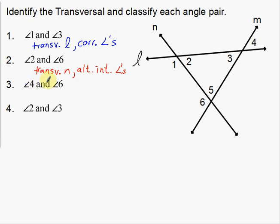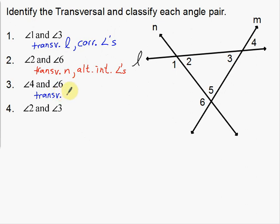Next, angles four and six. We're using six again, but now going all the way up to four. Notice M right here is going to be my transversal — it helps make six and it helps make four. So my transversal is line M.